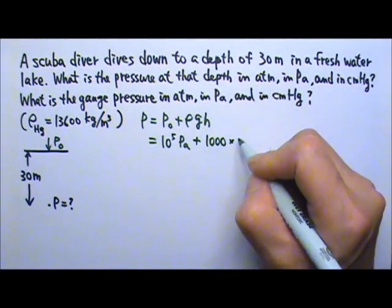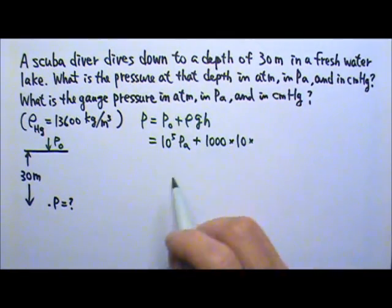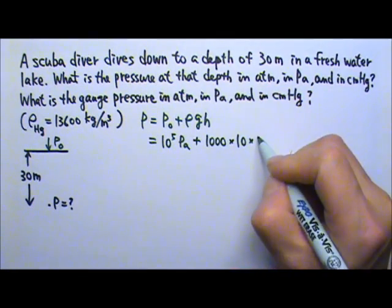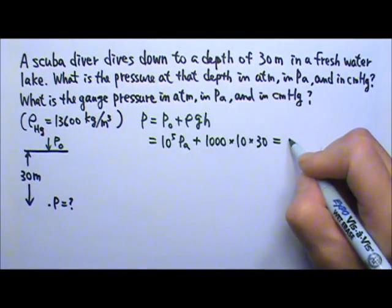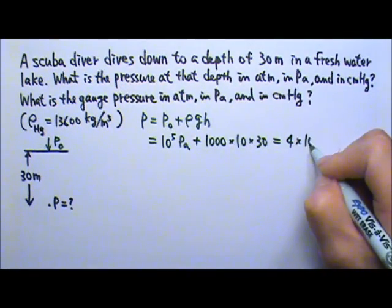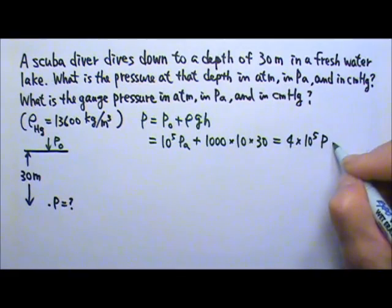Times g, I'm just going to use 10 for g. The depth over here is 30. And so this will give us 4 times 10⁵, and that will be pascals.